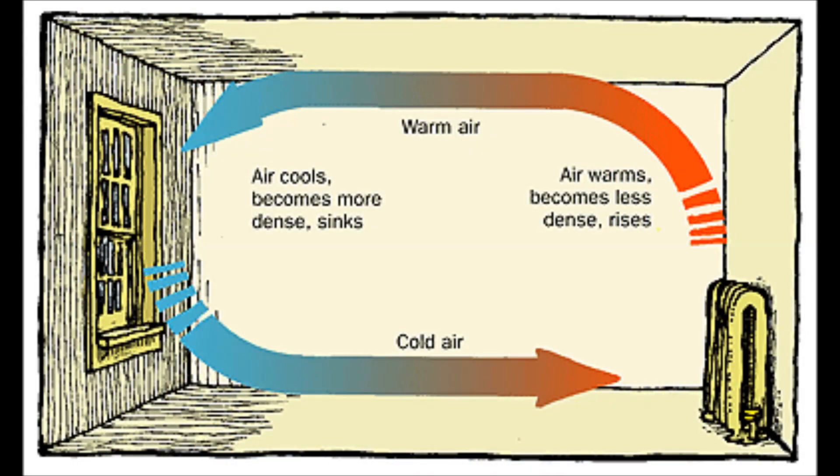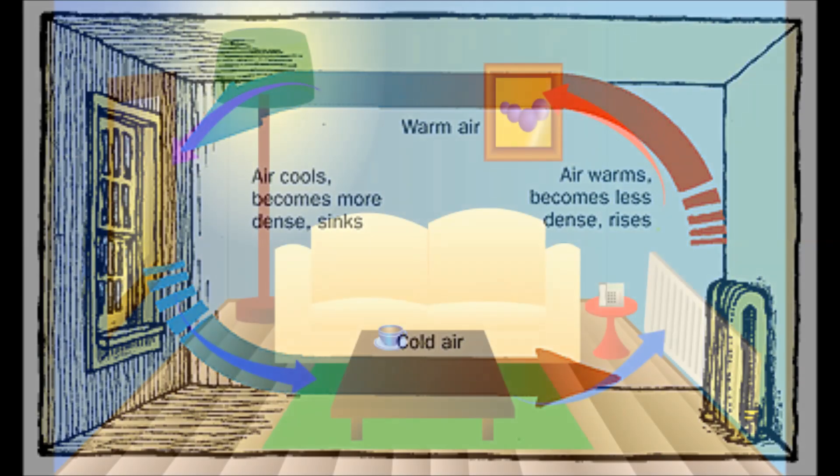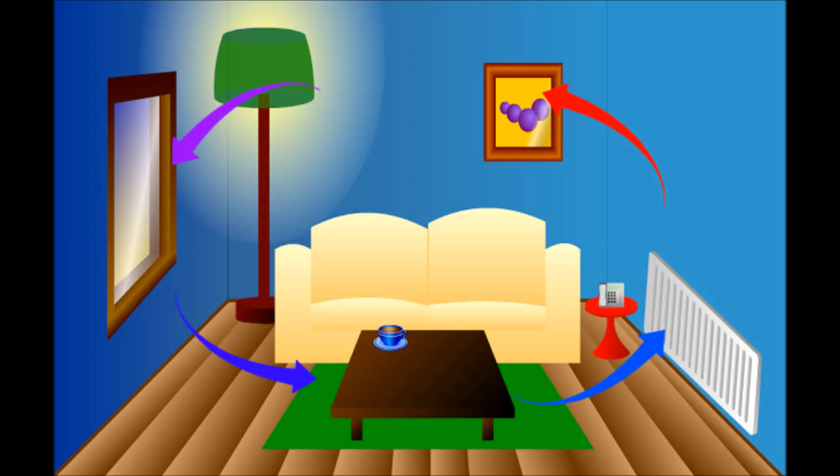As the hot air rises, it pushes some of the cold air near the top of the room out of the way. The cold air moves towards the bottom of the room to replace the hot air that has risen. As the colder air approaches the heater at the bottom of the room, it becomes warmed by the heater and begins to rise. Once more, convection currents are slowly formed. Air travels along these pathways carrying energy with it from the heater throughout the room.